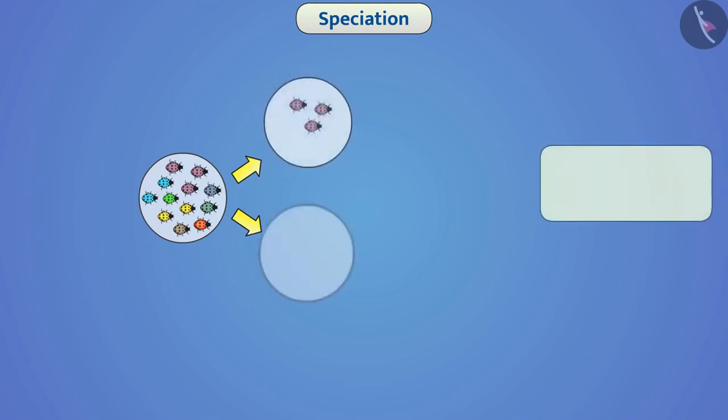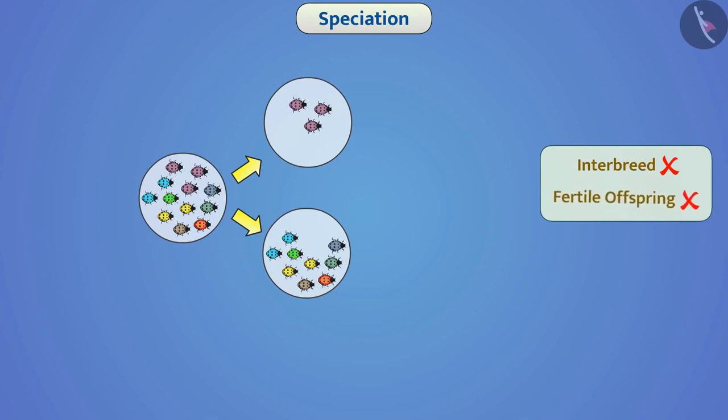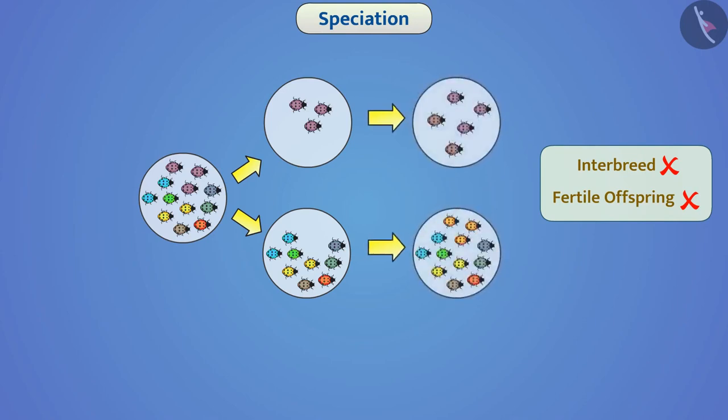Sometimes, due to various reasons, existing species of organisms get divided into two groups that cannot interbreed with each other and cannot produce fertile offspring. In such a situation, we say that new species have been developed from the existing species. We call it speciation. Let us discuss various factors responsible for speciation.